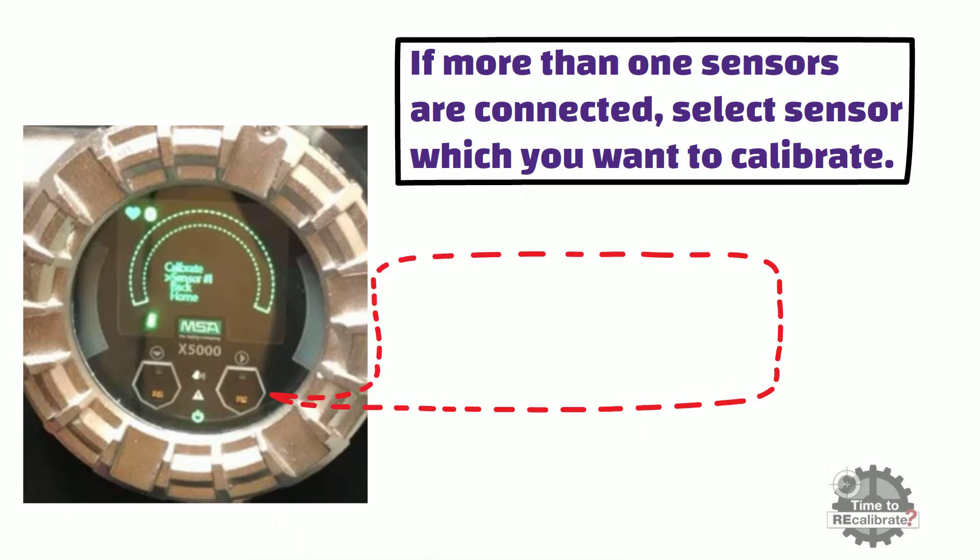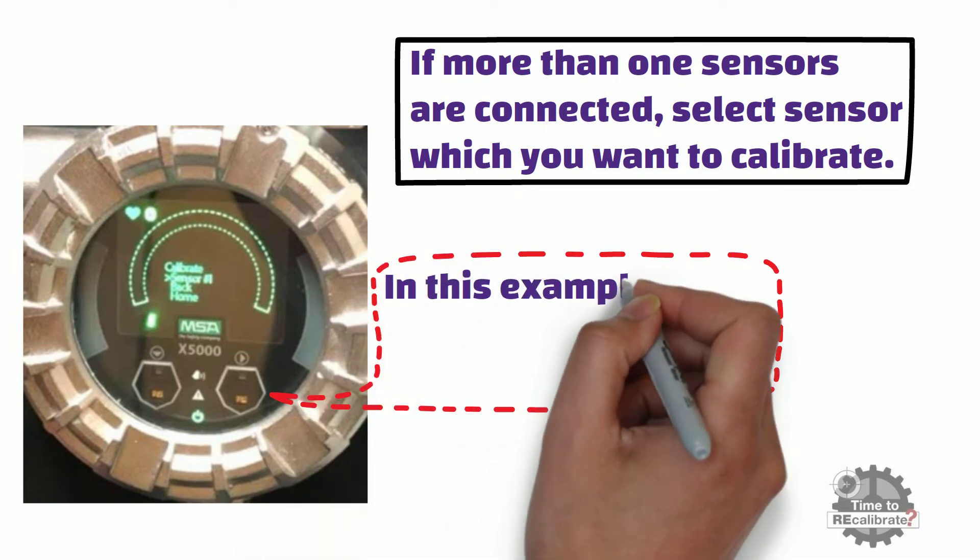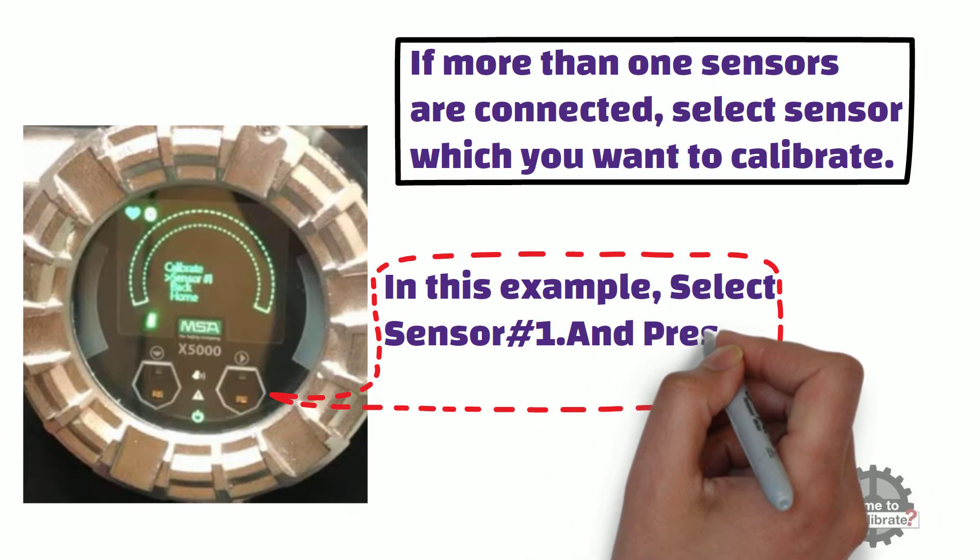In this example, we are going to calibrate sensor number 1. So, select sensor 1 and press the right hand side button.